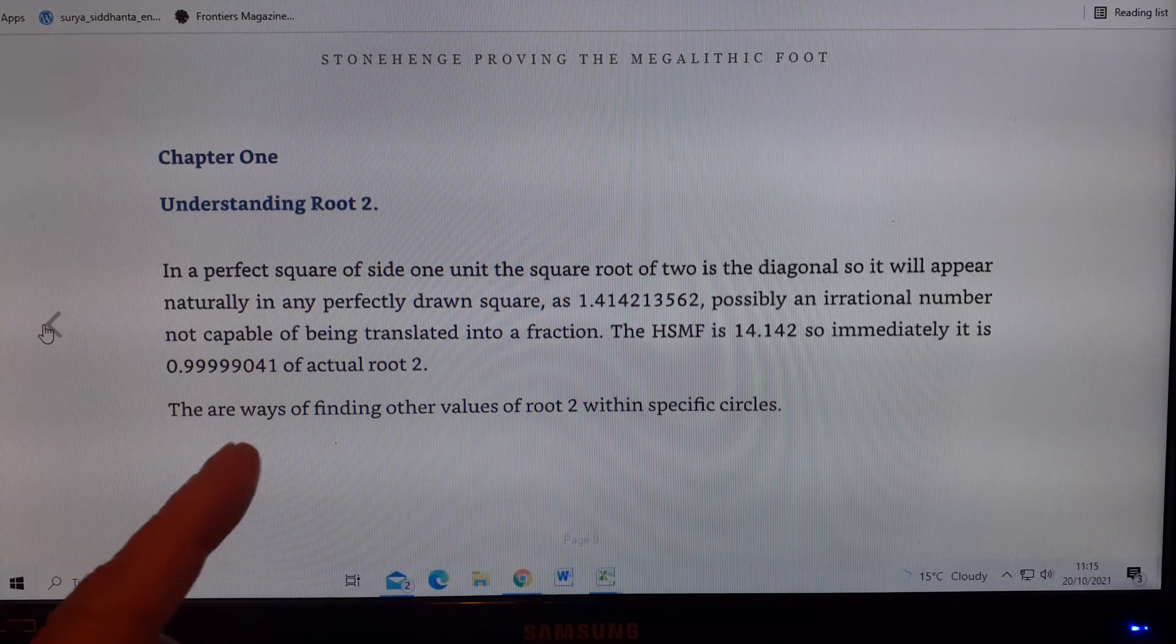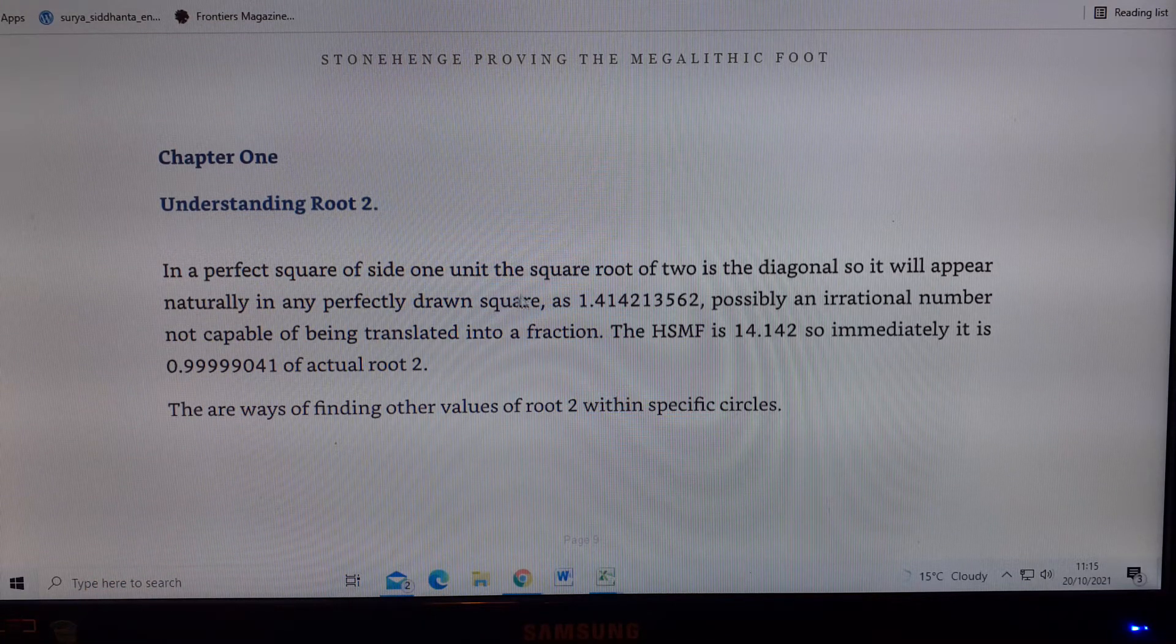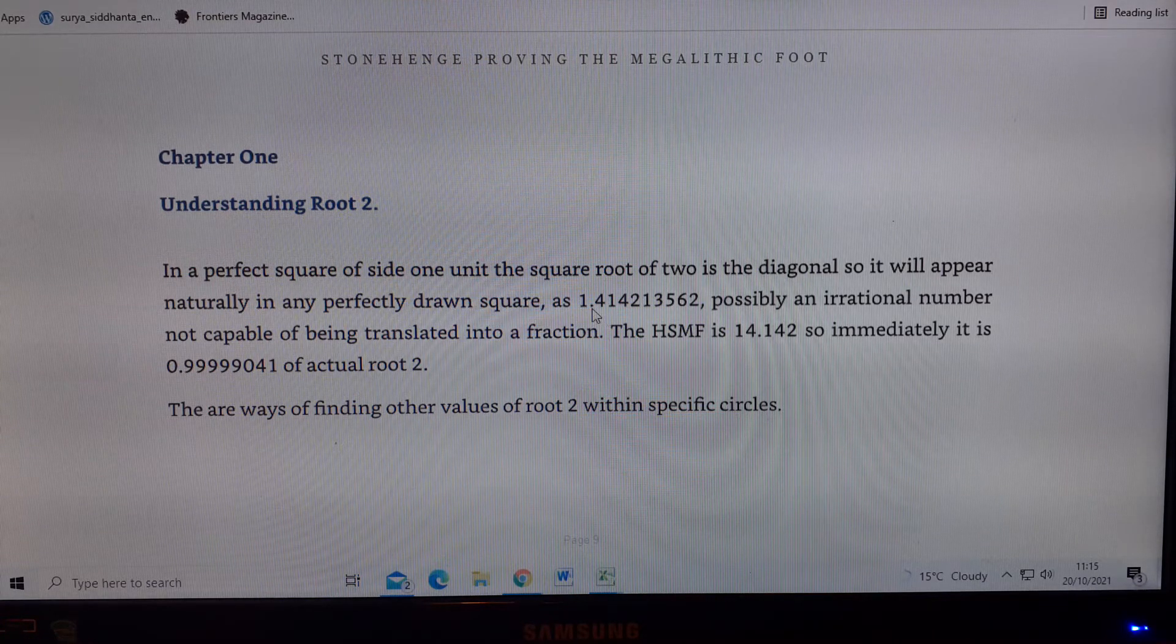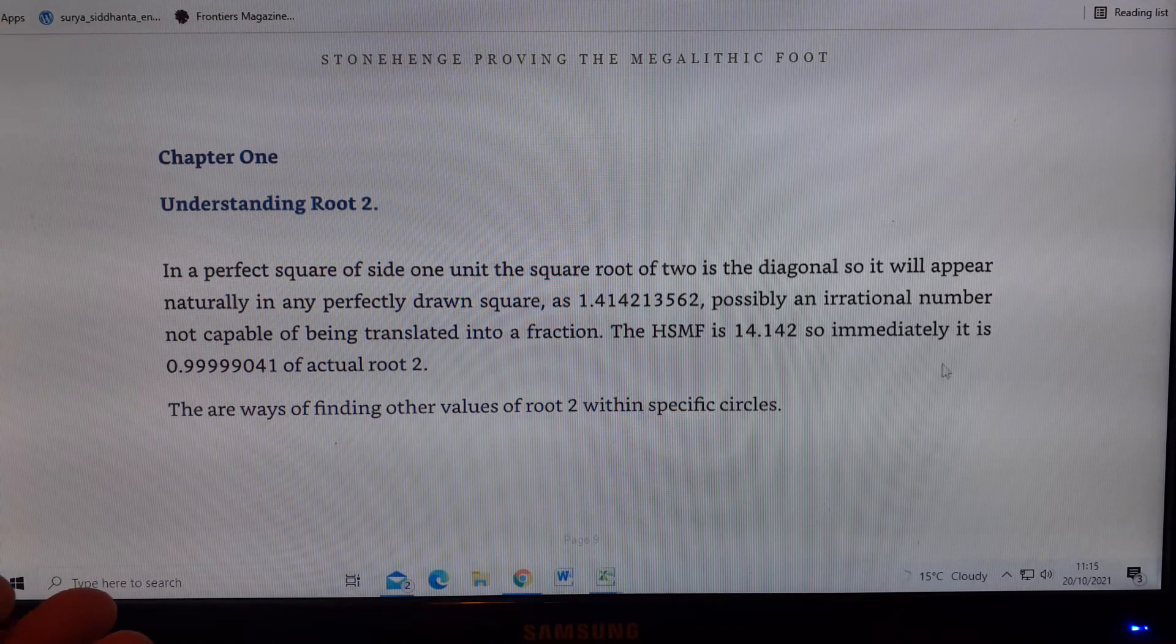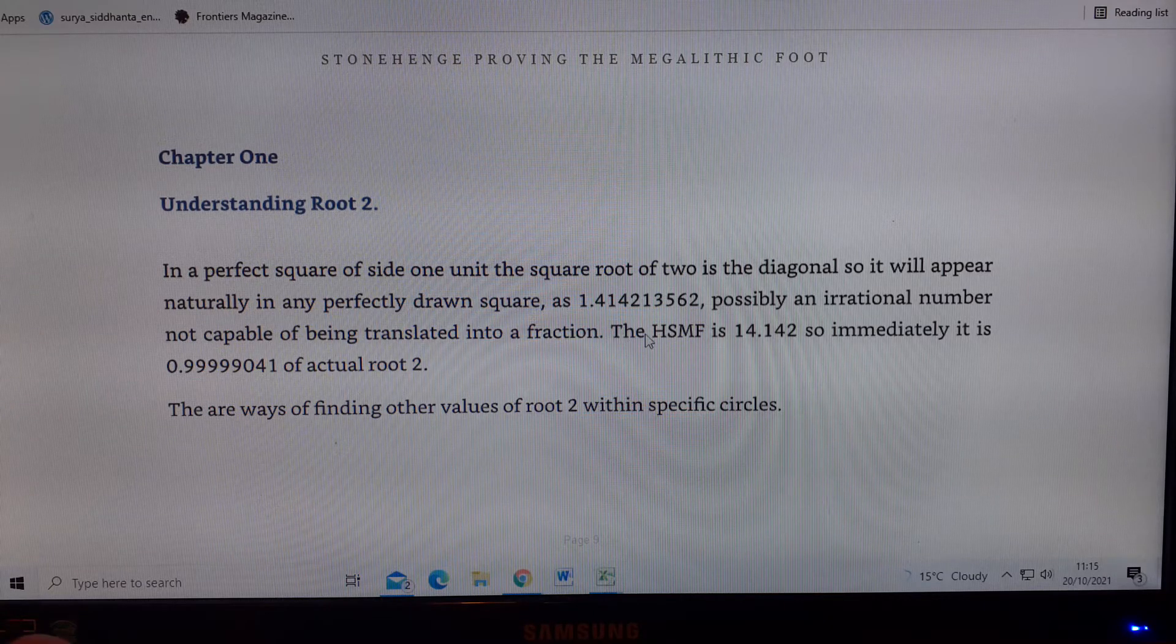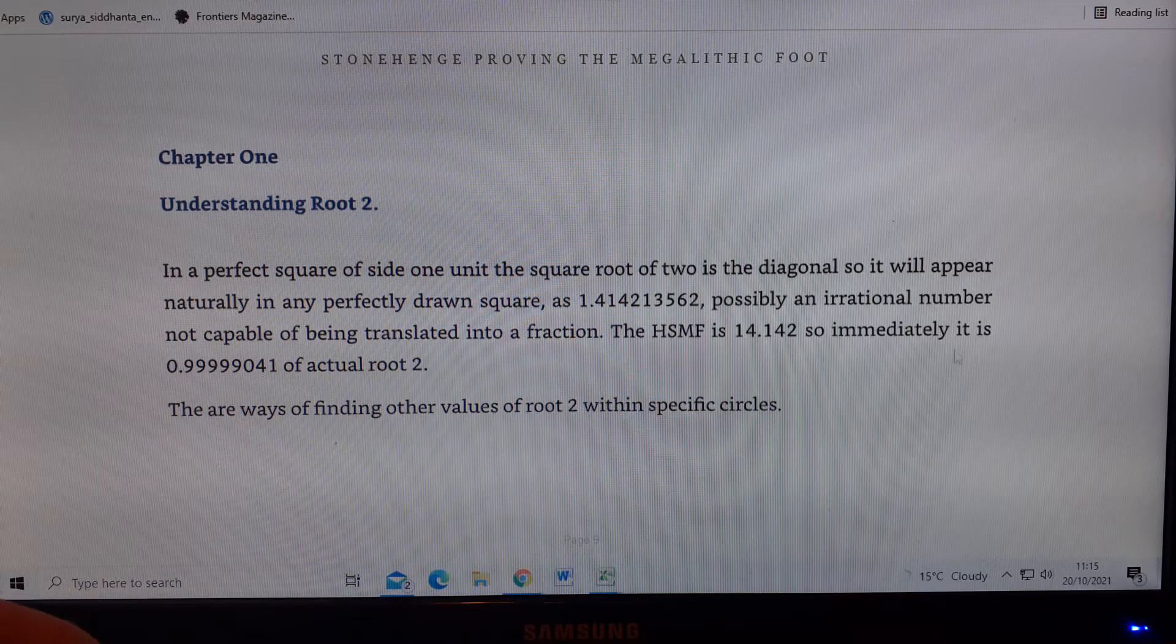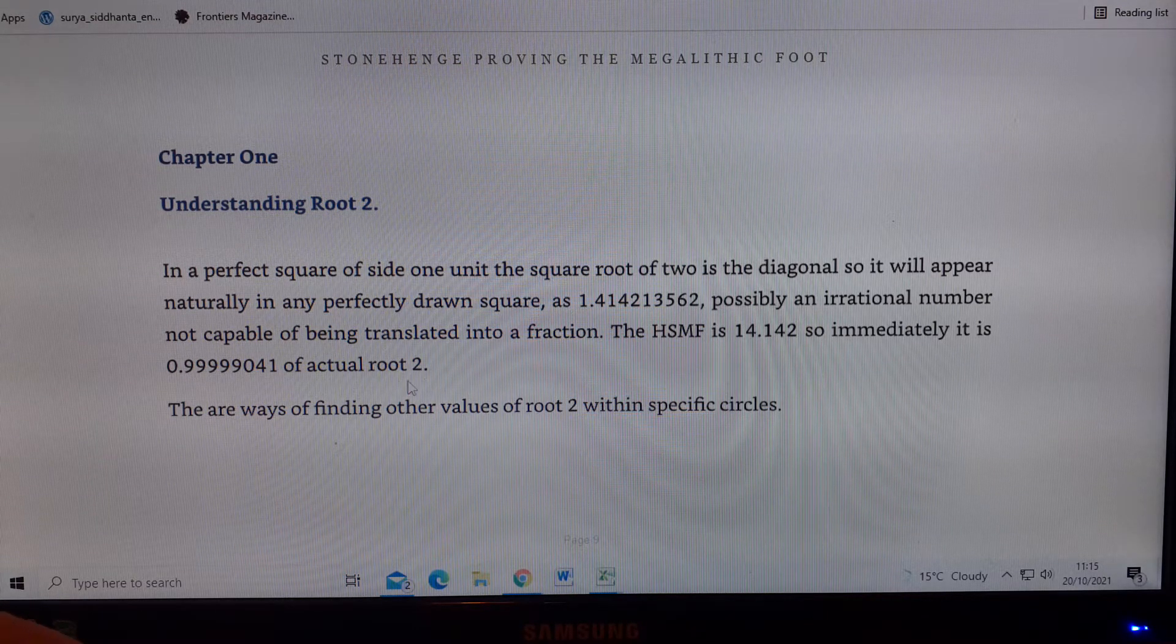Chapter 1 Understanding Root 2. In a perfect square of side 1 unit, the square root of 2 is the diagonal, so it will appear naturally in any perfectly drawn square as 1.414213562, possibly an irrational number not capable of being translated into a fraction. The HSMF is 14.142, so immediately it is 0.99999041 of actual root 2.